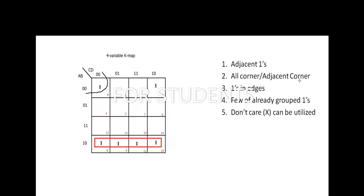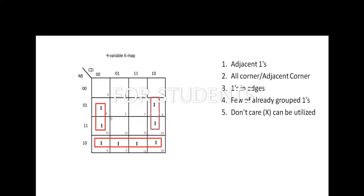Rule 3: ones at the edges. Suppose you have a one here, here, and here. Students generally make the mistake of grouping these as two separate pairs. But whenever you have ones at the edges, you must look at the opposite edge. By looking at the opposite edge, those two pairs actually form a quad. Grouping them separately is the common mistake.